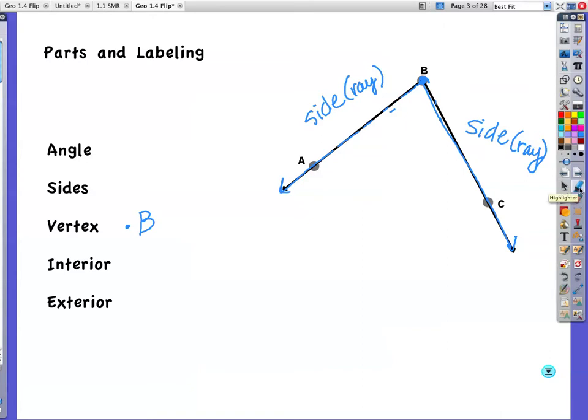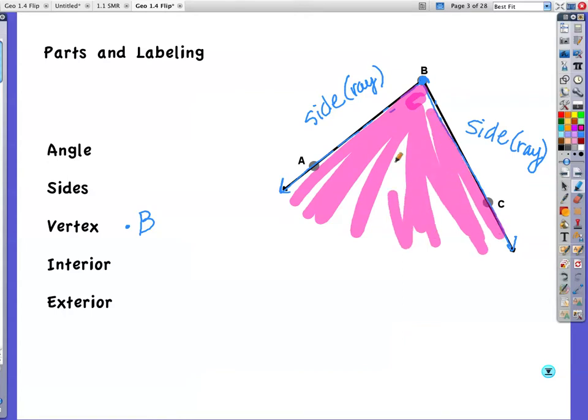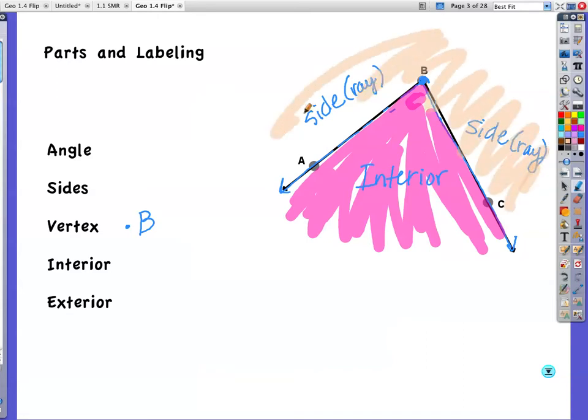Interior. If you had to guess where the interior is, this would be considered the interior of the angle. That means that everything else that's not colored would be considered the exterior. So anything out here is considered the exterior of the angle. And of course, this ray would go on forever and ever, so you have the interior on the inside and the exterior is on the outside of that.